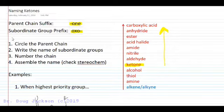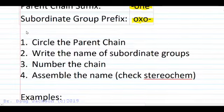So let's look at a few examples. In each case when we name a compound, we always circle the parent chain that way we can easily see the names of groups that need to have a name.